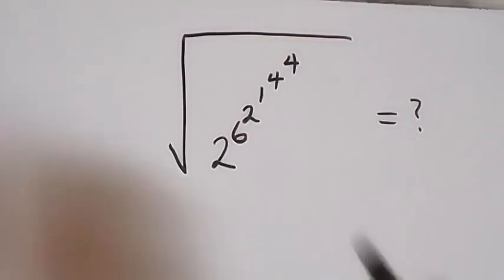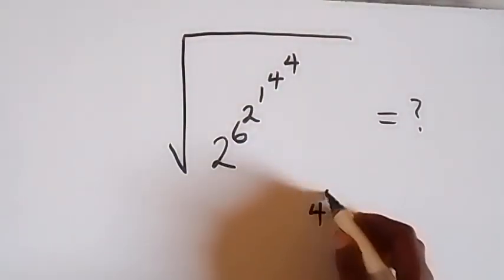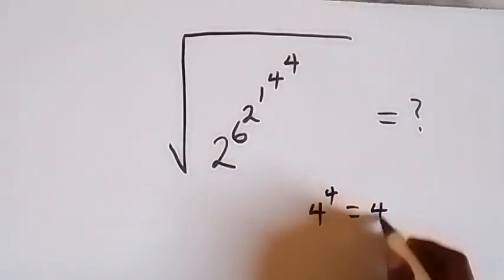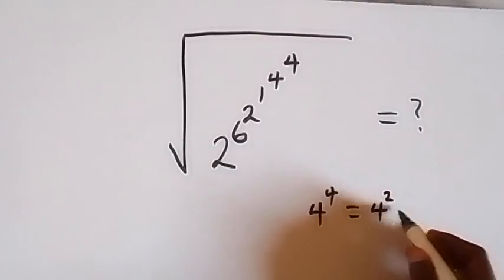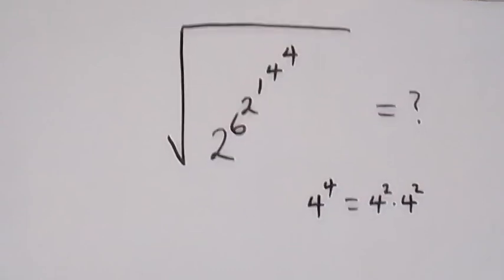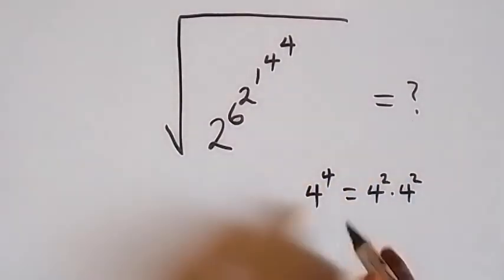From here, we start from the top. What we have there is 4 raised to the power 4. We can equally write this as 4 raised to the power 2 times 4 raised to the power 2. From the law of indices, that's the same thing as 4 raised to the power 2 plus 2, which is also 4.